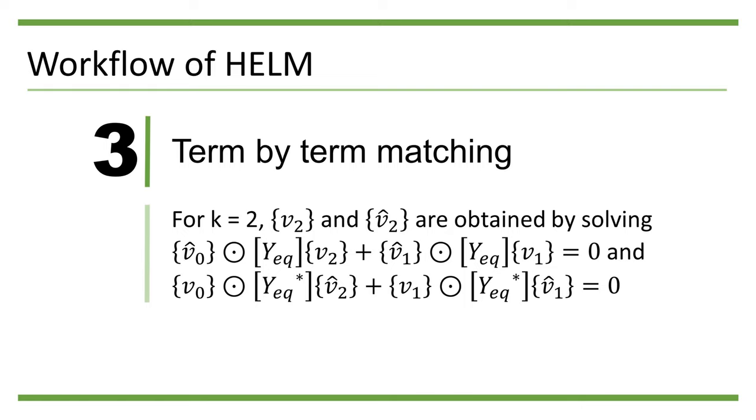For k = 2, the corresponding coefficient on the right-hand side of the power flow equation is 0. So V2 and V̂2 are obtained by solving {V̂0} ⊙ |Yeq|{V2} + {V̂1} ⊙ |Yeq|{V1} = 0